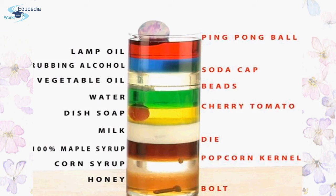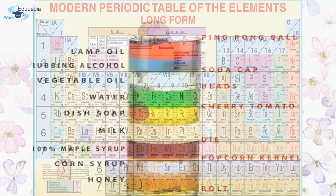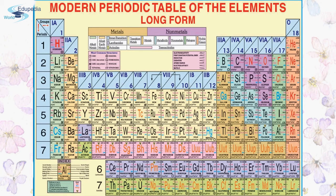Now let's look at examples of many substances together and see the differences in their densities. Higher-density substances sink to the bottom of a beaker while lighter ones float. The highest density in this example is the iron bolt, followed by honey, then corn syrup, then popcorn kernels or milk. Higher up in the picture, the substances have lesser density — for example, the ping-pong ball has a very low density compared to the iron bolt.